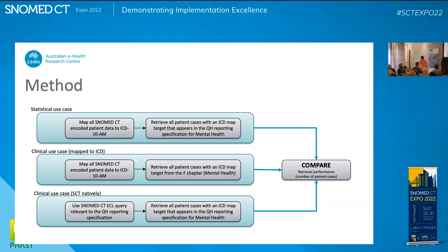I had three things I wanted to do: take SNOMED CT data and map it to ICD-10AM — which is kind of what we're already doing — apply an existing Queensland Health mental health reporting specification, look at the F chapter to see what mental health codes are there and compare, and then use the data natively with an ECL query relevant to the Queensland Health reporting specification and compare all the results.